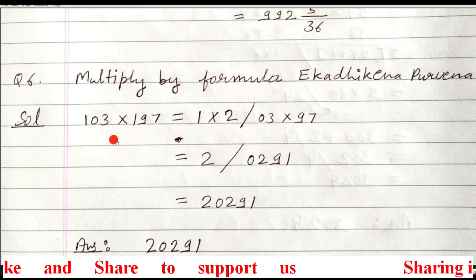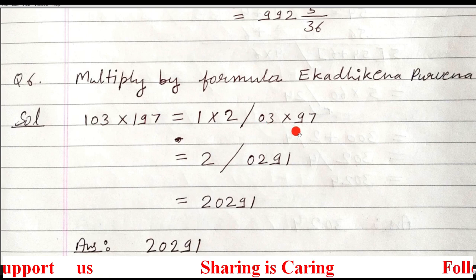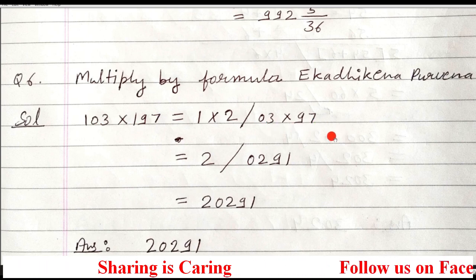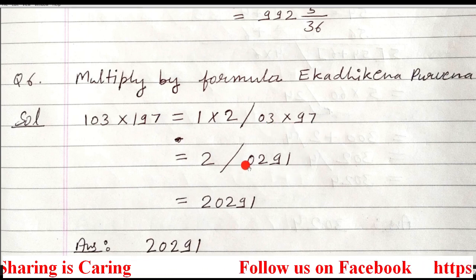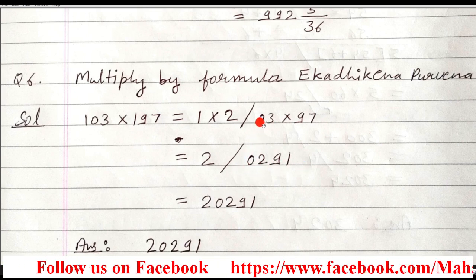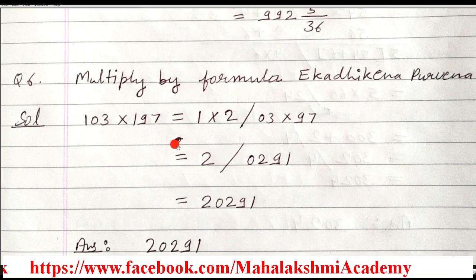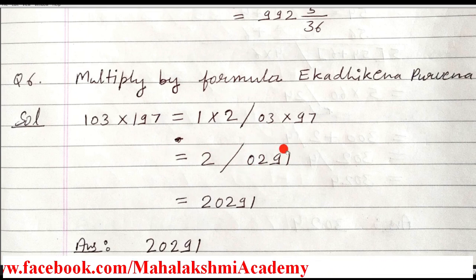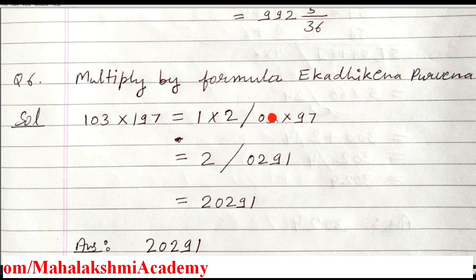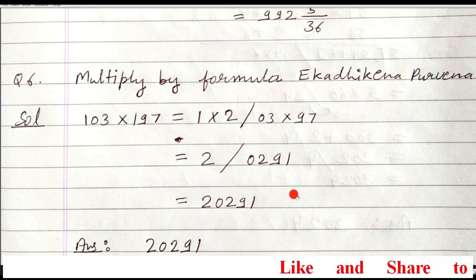One more important thing: the base is near about 100. So 100 multiplied by 100 gives 4 zeros, which means 4 digits should exist in that section. Don't ignore this 0 — this 0 is very important and you have to write it here. Then remove the slash. So the answer comes out to 20,291.